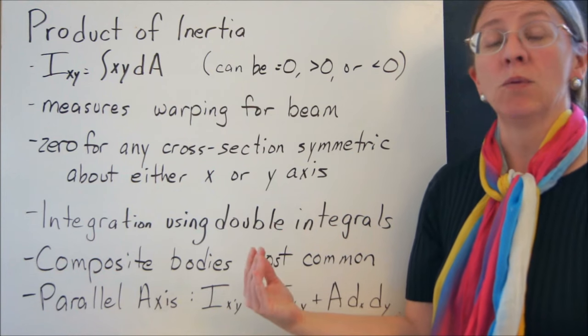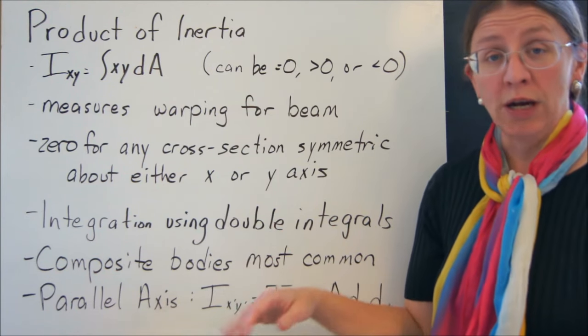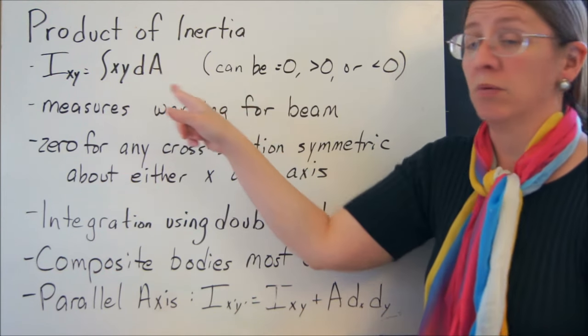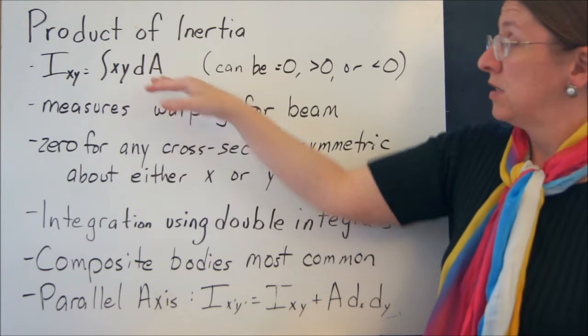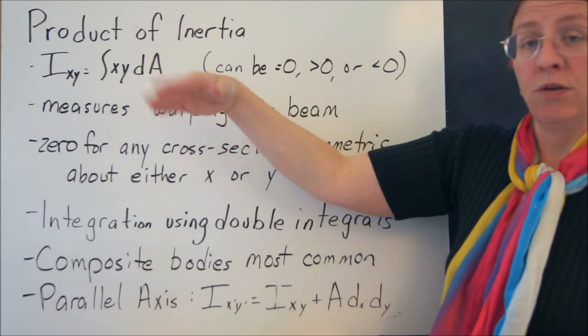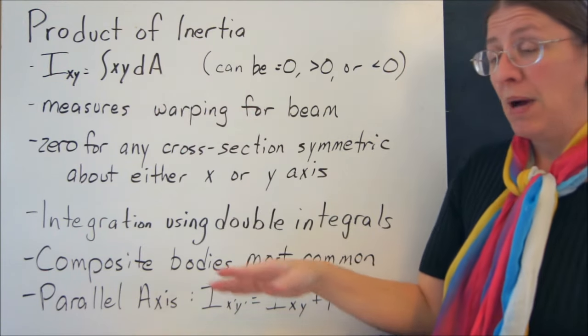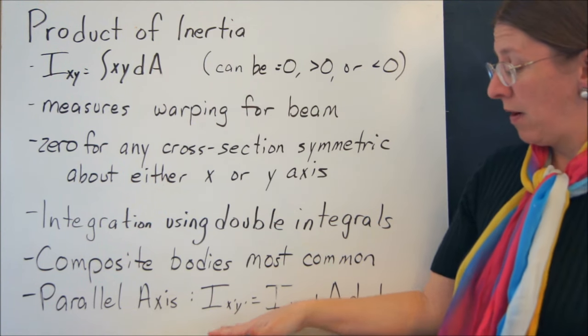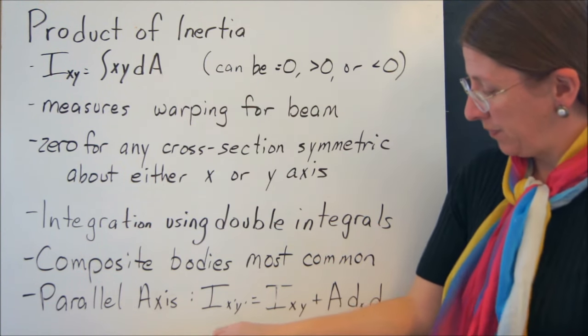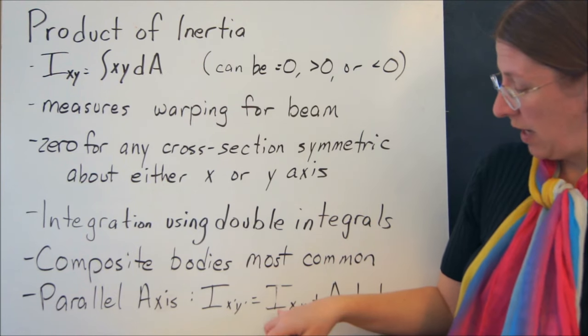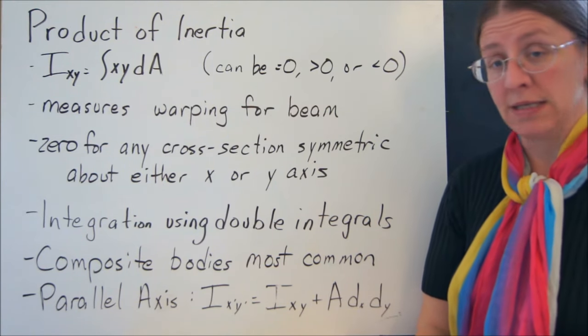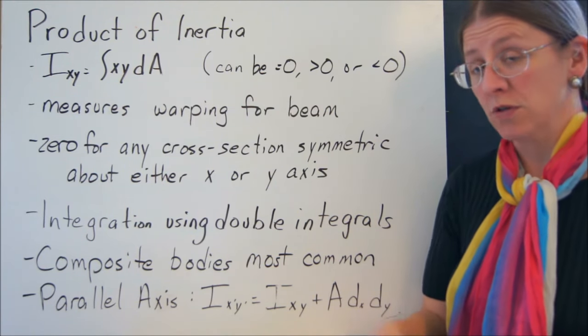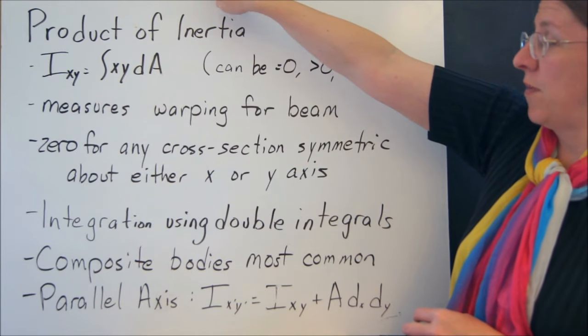So how do you find what the product of inertia is? You can integrate it just like before, except this is usually done with a double integral instead of a stripe. So if you're going to integrate it, it's a straight integral. Composite bodies are a little bit more common. You'll see that. That's what we're going to do. The parallel axis theorem here says Ixy is Ixy plus A dx dy, where those are the two distances from the axis.